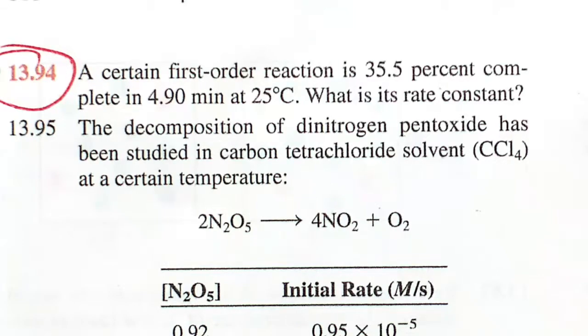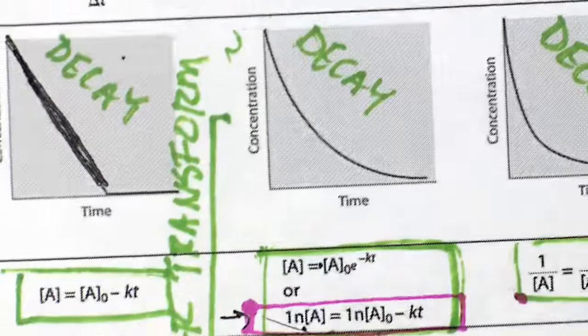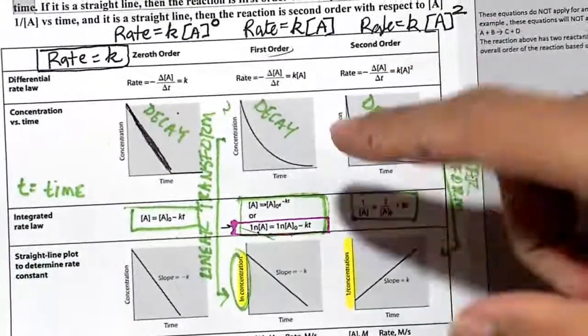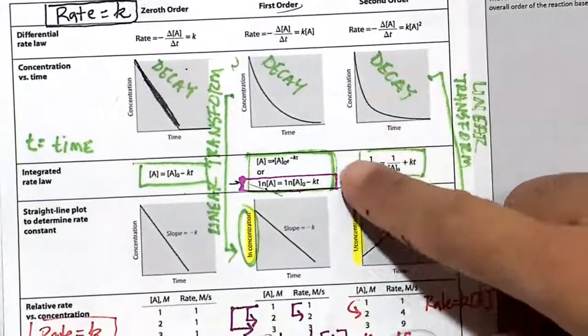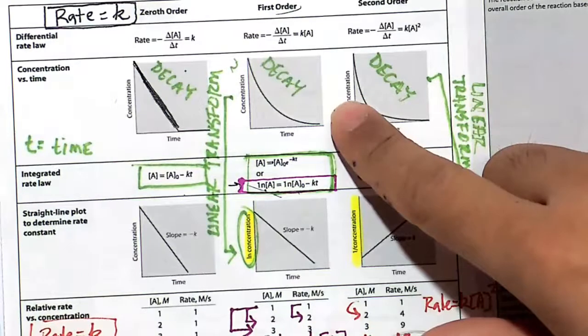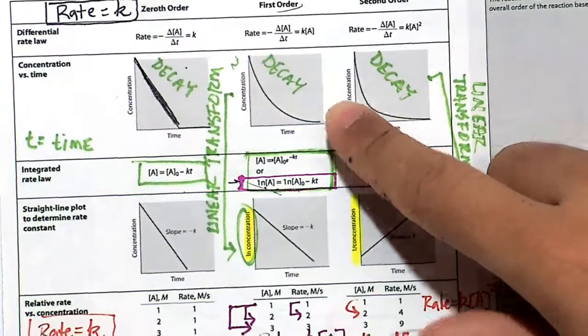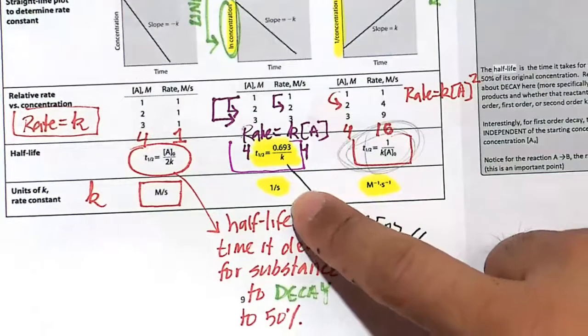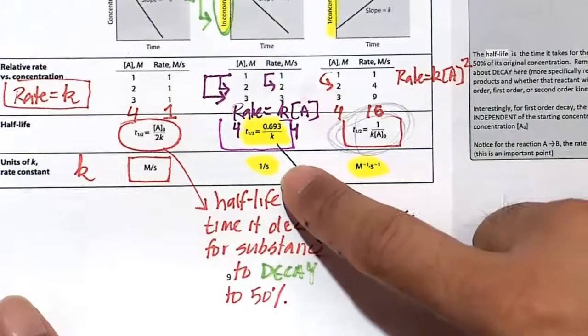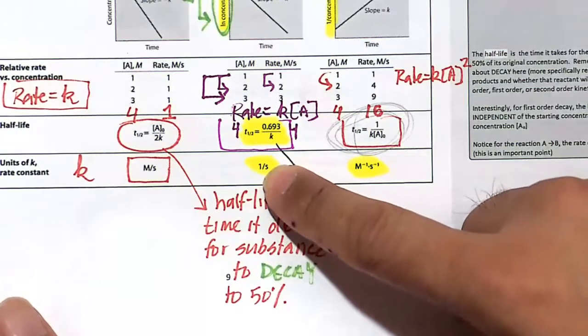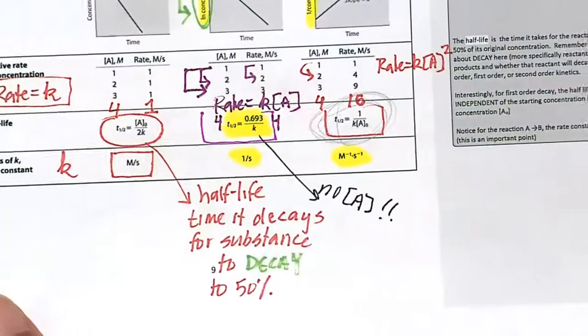Automatically, when you see first-order, you should be thinking about these types of equations here. These types of equations for the decay of the reactants as products are formed. Also, this is the equation for the half-life. And the units of lowercase k rate constant is 1 over time, whether it's 1 over seconds or 1 over minutes or 1 over hour.